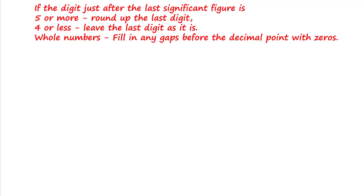Significant figures are a way of approximating numbers. When working with significant figures we use these rules: if the digit just after the last significant figure is five or more, we round up that last digit; if it's four or less, we leave the last digit as it is. When working with whole numbers we need to fill in any gaps before the decimal point with zeros.